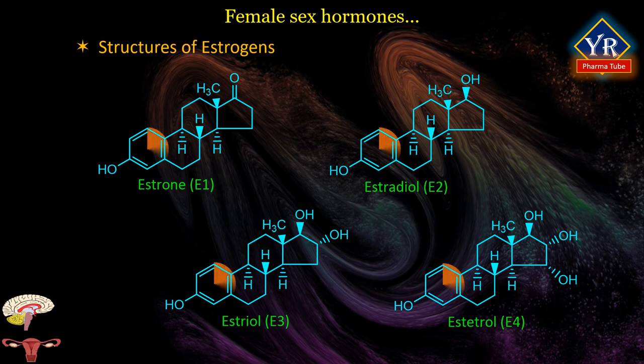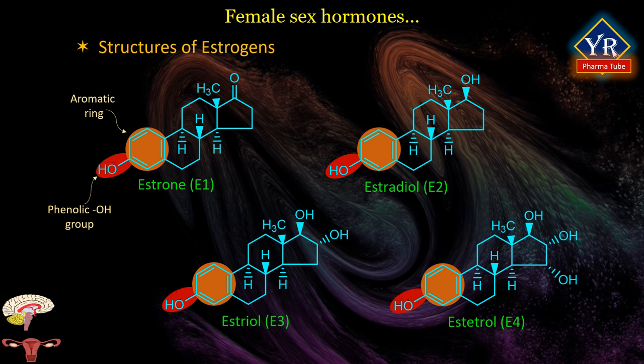All estrogen structures possess an aromatic ring A and a phenolic hydroxyl group at C3, while estradiol, estriol, and estetrol contain one hydroxyl group at C17. Estriol and estetrol contain a third hydroxyl group at C16, and estetrol consists of a fourth hydroxyl group at C15. Estradiol is the predominant estrogen during reproductive years both in terms of absolute serum levels and estrogenic activity.